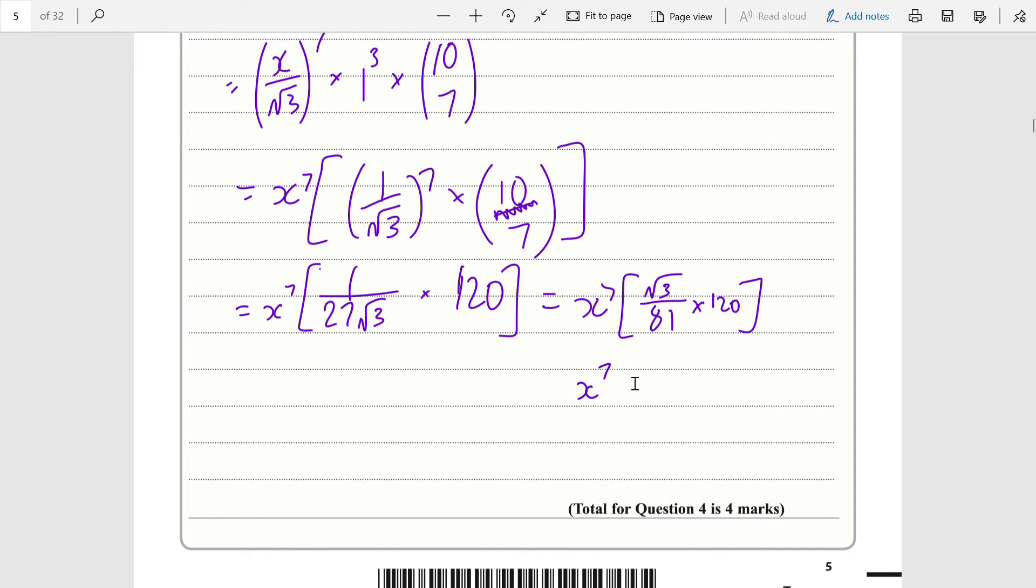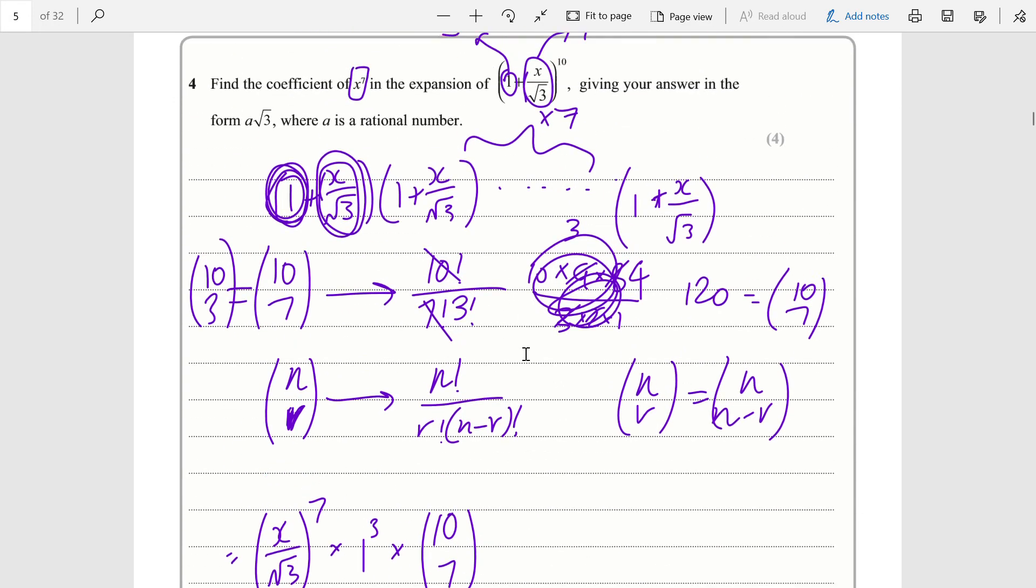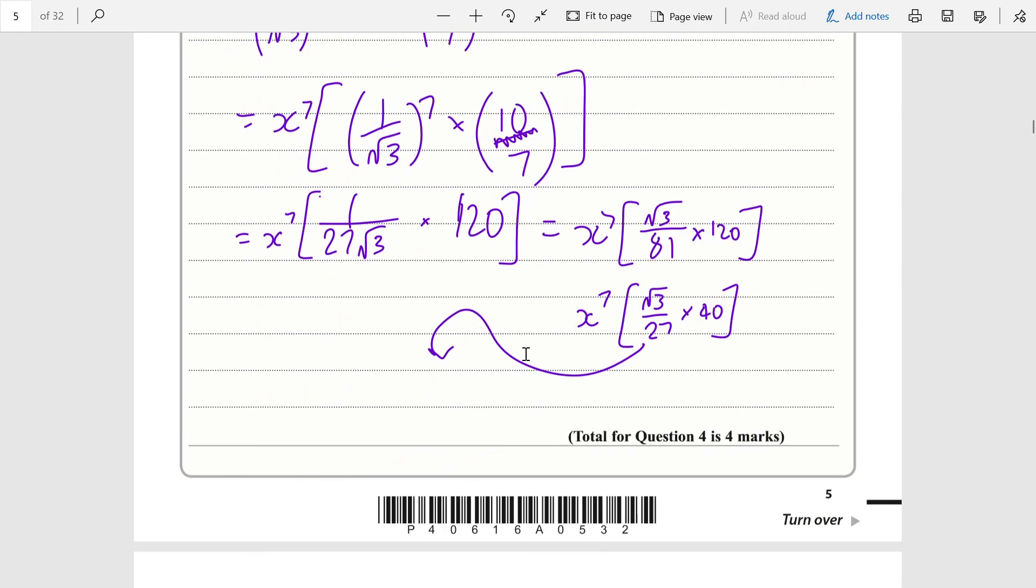You get x to the 7 times root 3 over 27 multiplied by 40. The coefficient you're looking for is 40 root 3 over 27, which is the number they are looking for.